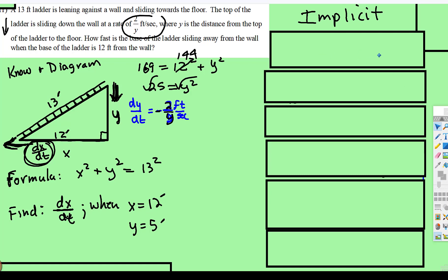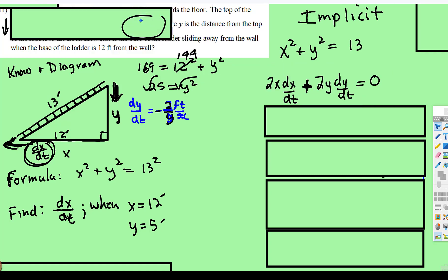So using implicit differentiation, there is our non-function. So when you take the derivative, 2x dx/dt plus 2y dy/dt is equal to the derivative of 13 is 0.